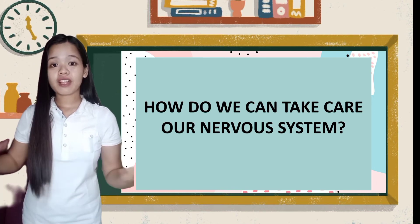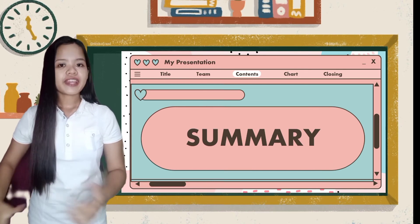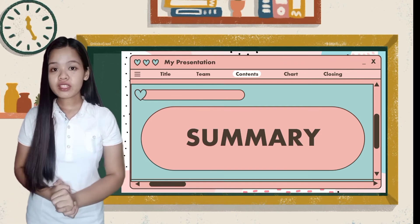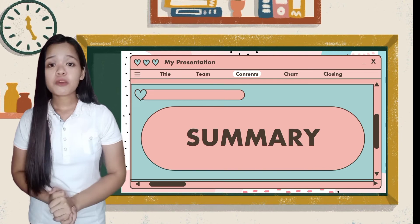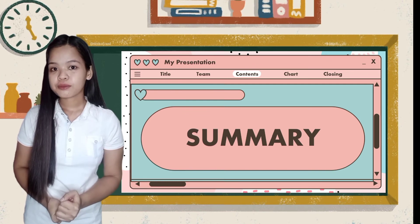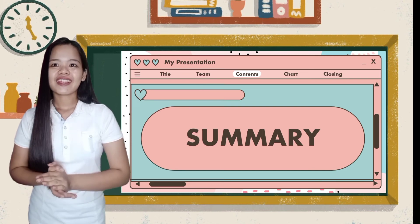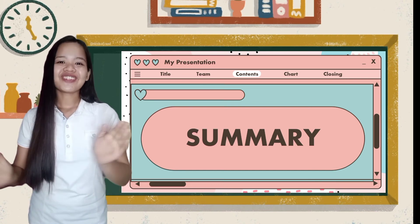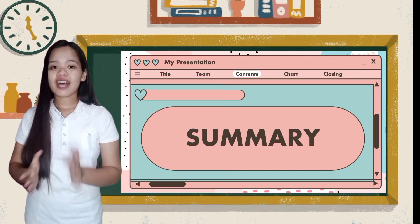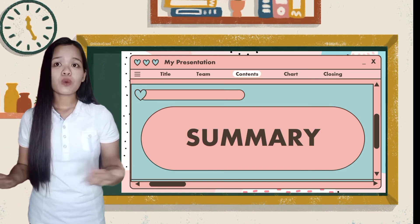Is our discussion clear? Do you have any clarifications? I have questions for you. What is our lesson all about? What are the six human organ systems at work? Who can define the integumentary system? What does the skeletal system consist of? What about our digestive system? The circulatory system? What is the muscular system? And last but not the least, what is the nervous system?